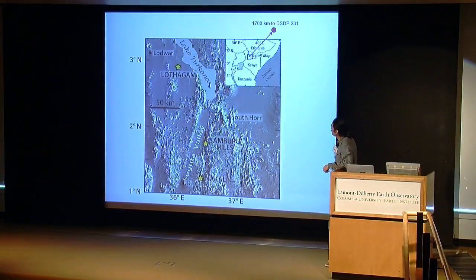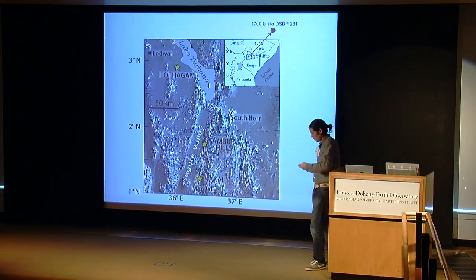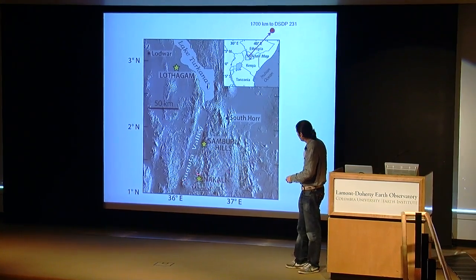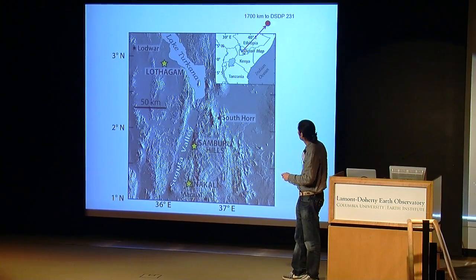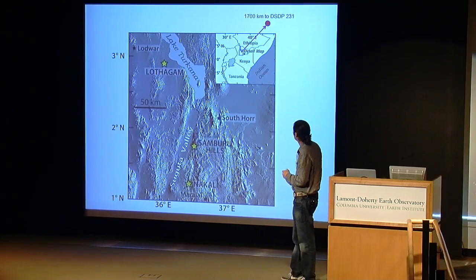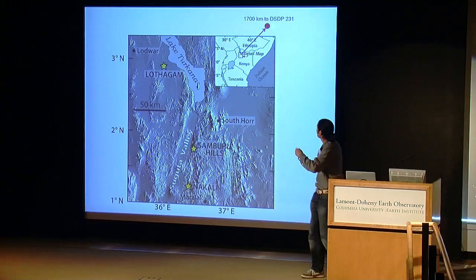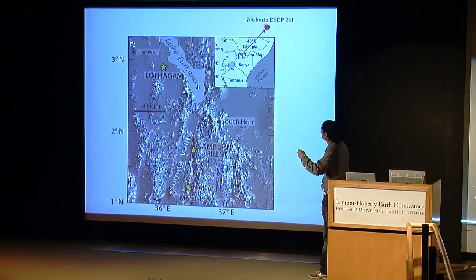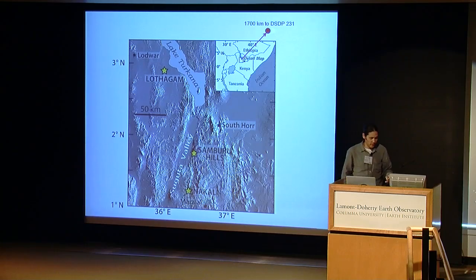Today I'm going to discuss data from three sites in the Turkana Basin and Seguda Valley. I'll start at Nakali, show data from the Samburu Hills, and then Lothugum. Just to put the 231 core into context, it's about 1,700 kilometers away — so this is a really excellent regional recorder, and we're moving into these three sites which are on-the-ground, higher-resolution recorders.